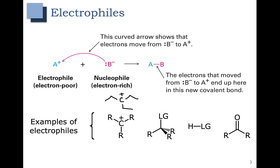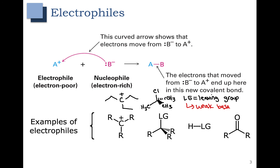Our next example has LG, which stands for some sort of leaving group. We're going to go through examples of what good leaving groups can be, but as a general rule a good leaving group is going to be something that is a weak base — for example, you could make that leaving group Cl⁻. In this case the chlorine is the leaving group. In another example we have an H bonded to a leaving group, and again we could make our leaving group chlorine.